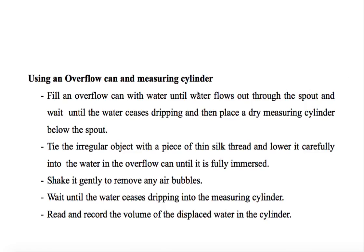For the overflow can method: fill the overflow can with water until water flows out through the spout, then wait until the water stops dripping. Place a dry measuring cylinder below the spout. Tie the irregular object with a piece of thin silk thread and lower it carefully into the water until it is fully immersed. Shake it gently to remove any air bubbles and wait until the water stops dripping into the measuring cylinder. Record the volume of displaced water.